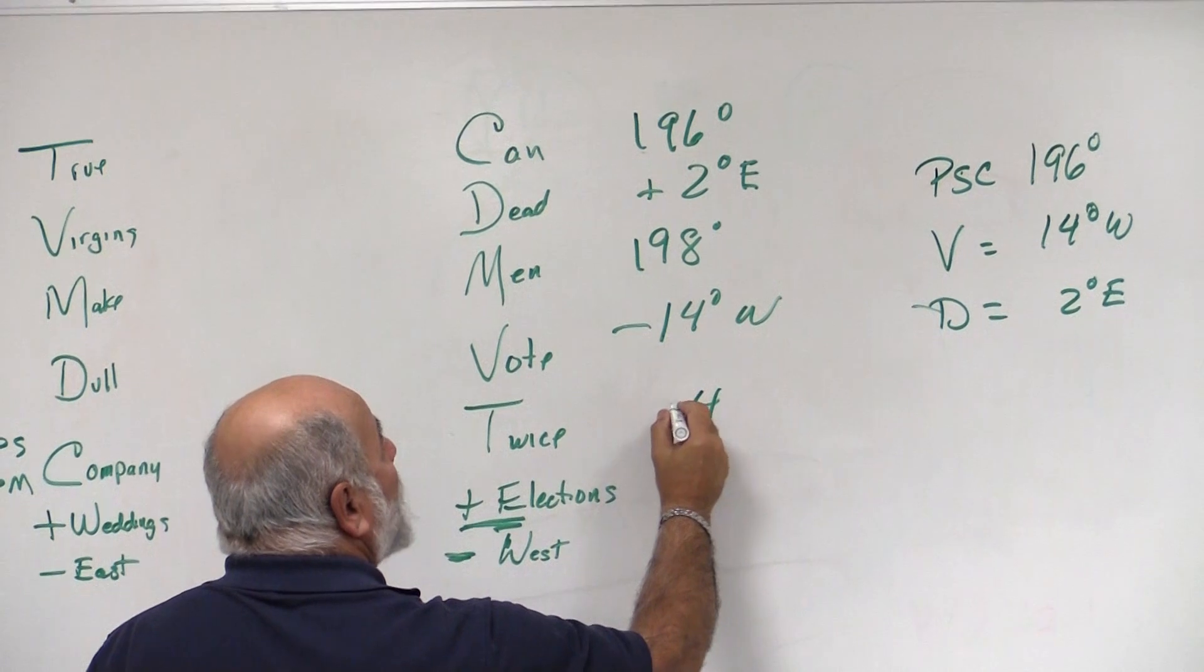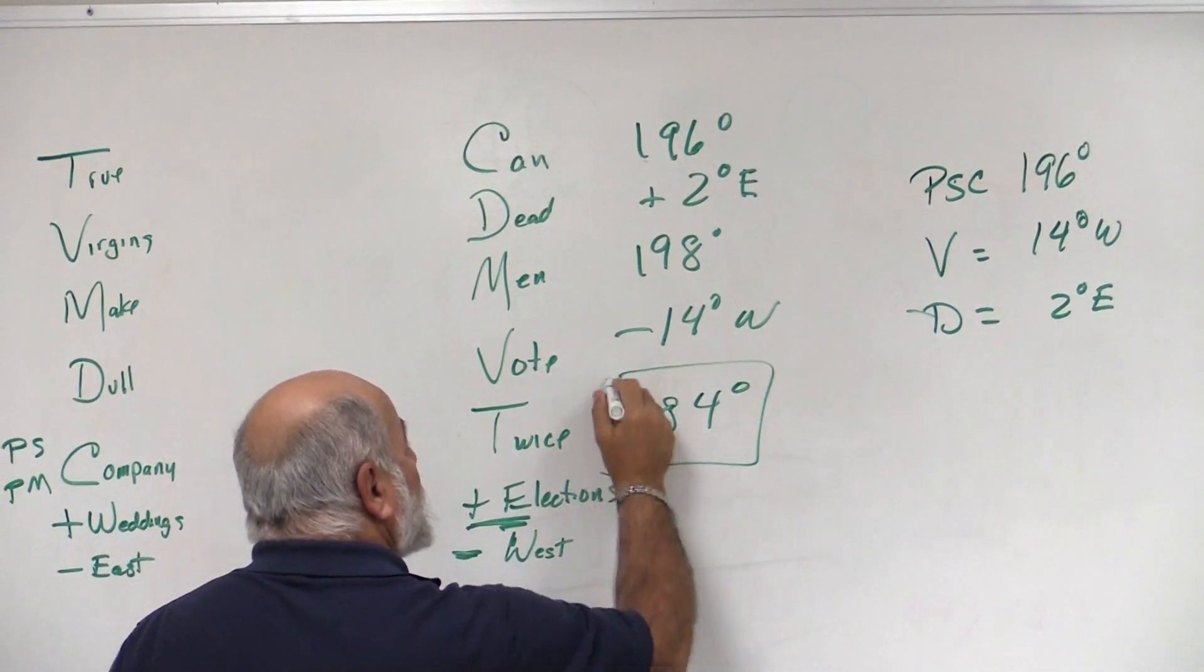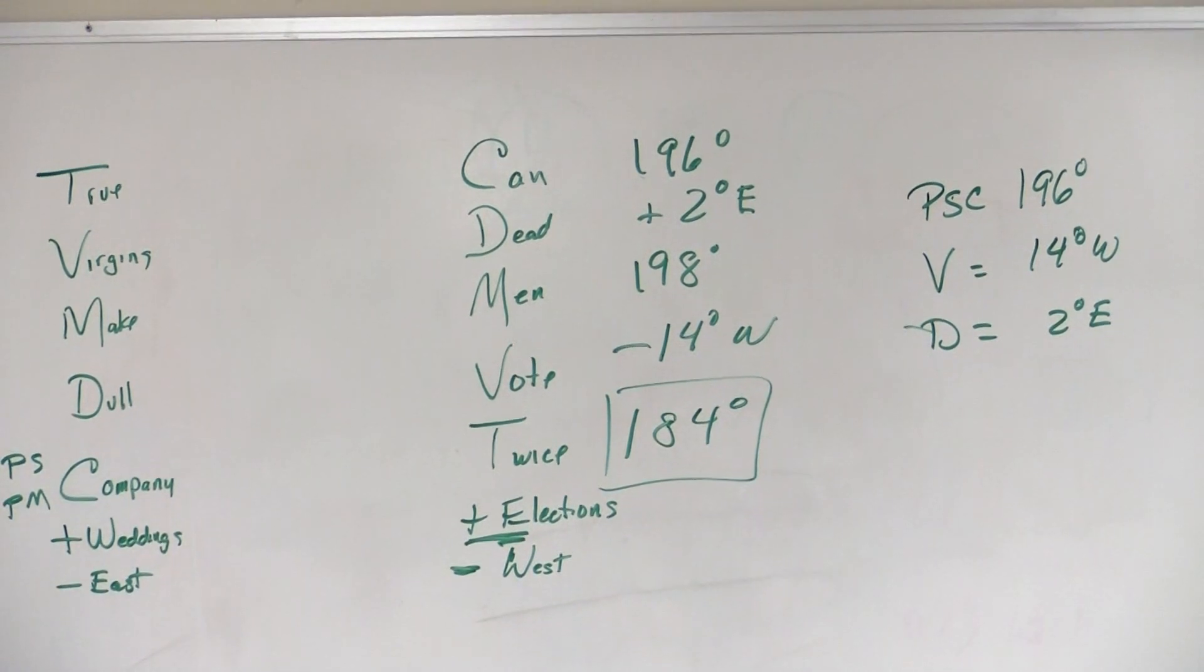8 minus 4 is 4, 9 minus 1 is 8. So, the true heading that we would draw on our chart is 184 degrees.